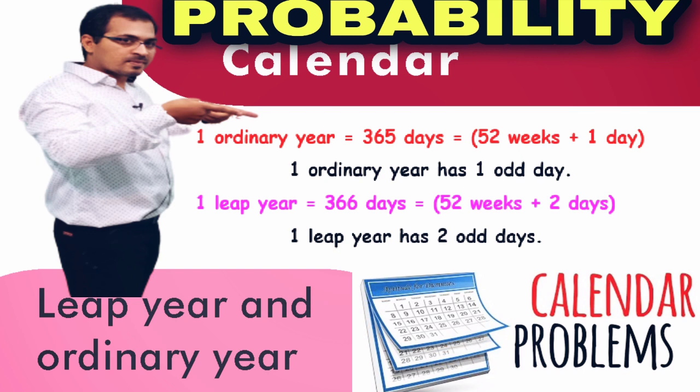Similarly, in a leap year there are 366 days, in which 2 days are extra. If 366 is converted into weeks, you will get 52 weeks and 2 extra days.